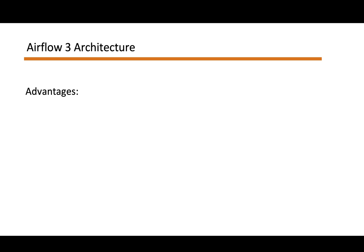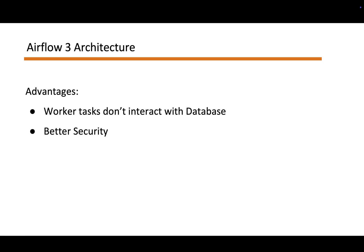Let's summarize what advantages the Airflow 3 new architecture brings. No component other than the API server and the scheduler talks directly to the database. Every heartbeat, state change, XCom, and log interaction flows through the stable task execution API via the API server. That single change removes a huge source of coupling and eliminates the need to ship database credentials into the execution environments.